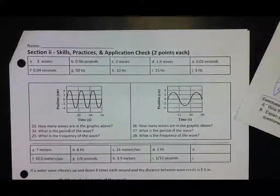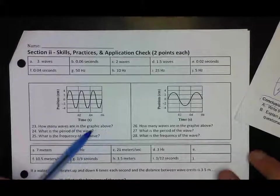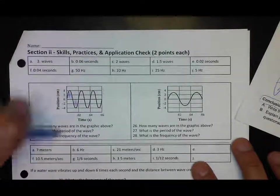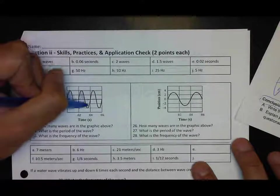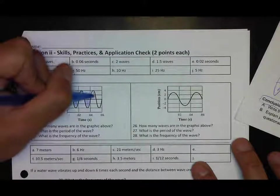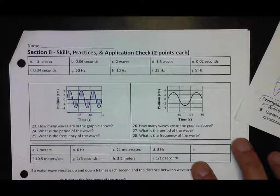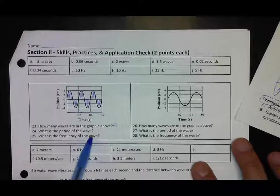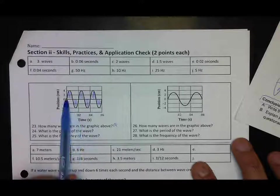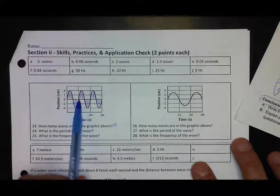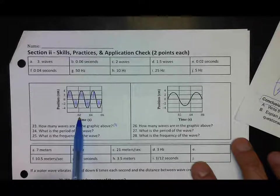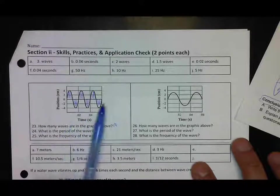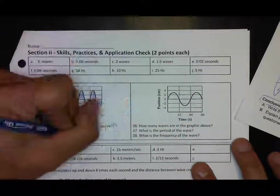How many waves are in the graphic above? We have one wave there, two waves, three waves - three waves there. What is the period of one single wave? The time for one wave is 0.02 seconds, so the period is the time for one wave, 0.02 seconds.